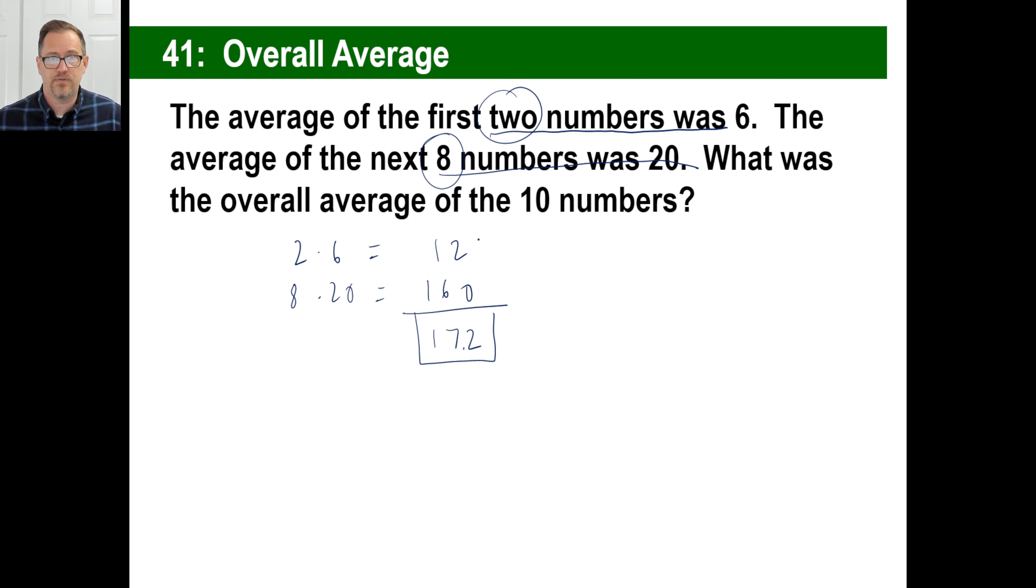Now, that's a sensible answer, right? If you had a bunch of numbers averaging 20, only a couple of numbers average in the six, your overall average is going to be closer to 20 than it is to six. Alright, let's try the practice problem on page 137. Pause it and go ahead and come back when you're ready.